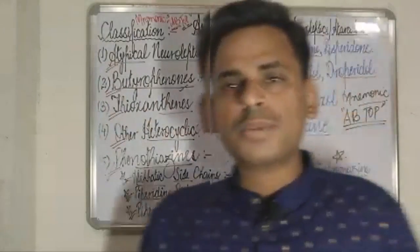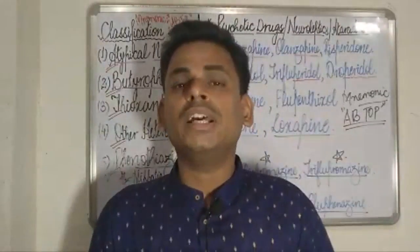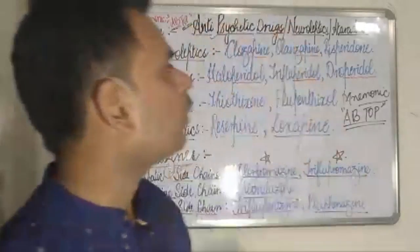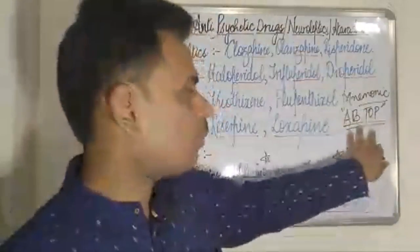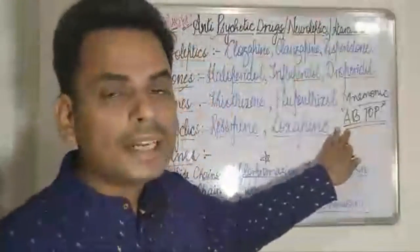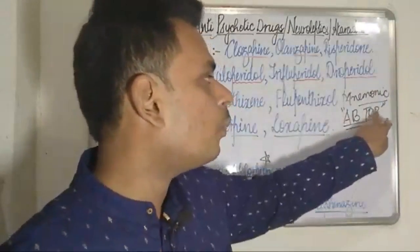Beginning with the classification — the classification of antipsychotic drugs becomes very difficult to remember, particularly when asked to write about it in professional exams. The mnemonic I have made is the alphabet A-B-T-O-P. By remembering this mnemonic, we can derive the entire classification, where each letter refers to one of the classes of drugs.